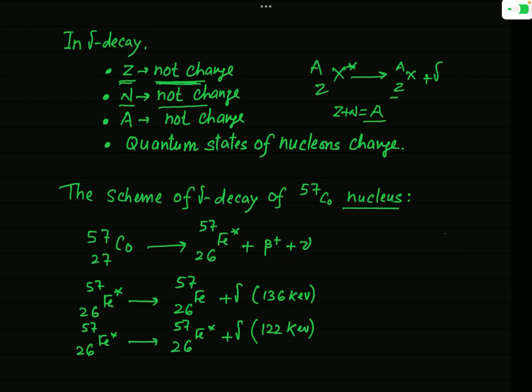There is no change in Z, no change in N, and no change in A after gamma decay. Only the quantum state or energy state of the nucleus gets changed. When the excited nucleus transits to a lower energy level, the extra energy is released in the form of a gamma photon.